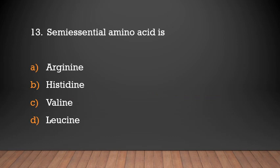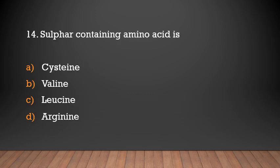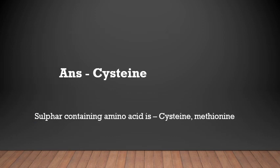Semi-essential amino acids are arginine and histidine — they are synthesized in the body but only in small amounts. Sulfur-containing amino acids are cysteine and methionine.